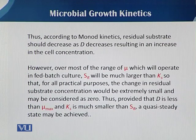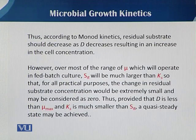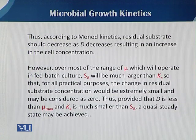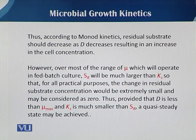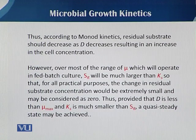We can easily say: if dilution decreases, then the residual substrate will also decrease, resulting in an increase in cell mass concentration. If mu remains the same, or if mu is greater than D, then there will be a higher concentration inside the fermentation vessel. Overall, the mu operating in fed batch and SR will be much larger than KS — the substrate utilization constant, which is the Monod parameter.